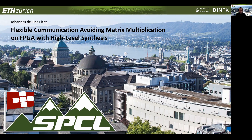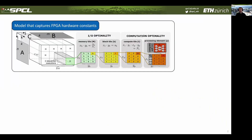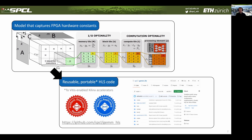For this submission we present a matrix multiplication accelerator implemented in pure Vivado HLS and built using the Vitus tool flow. Our work uses a high-level model that captures the hardware constraints of the FPGA we're targeting, so that we can simultaneously optimize for compute optimality by maximizing usage of logic such as DSPs and LUTs, and I/O optimality by optimally using BRAM. We implement portable HLS code that targets any Vitus-enabled accelerator, available on GitHub.